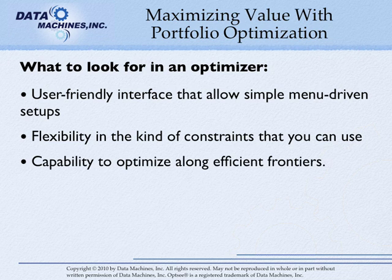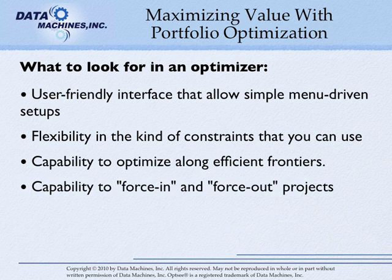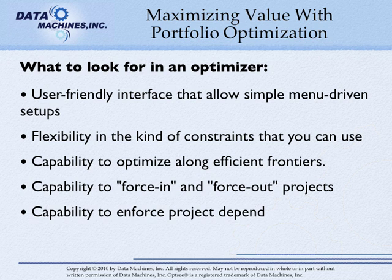Also, be sure that you can optimize to different attributes and criteria, including on efficient frontiers. Make sure that your optimizer allows you to force in or force out projects in the portfolio. You also want the capability of handling project dependency rules, so projects that are dependent on one another are included or excluded from the optimized portfolio.